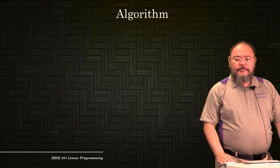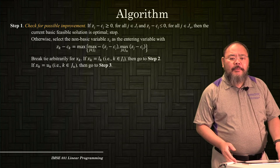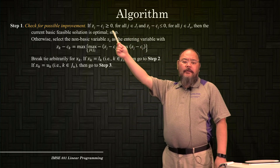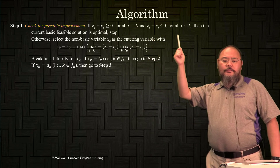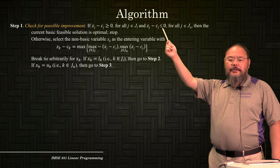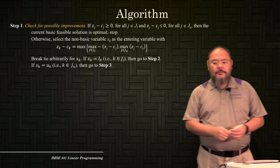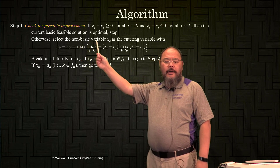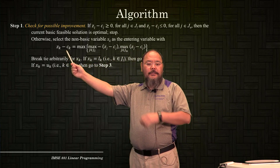Now let's formally present the algorithm. Step one is checking for optimality and possible improvement. If all current variables at the lower bound have zj minus cj greater than or equal to zero, and all variables at the upper bound have their corresponding zj minus cj less than or equal to zero, then the current basic feasible solution is optimal and we can stop.